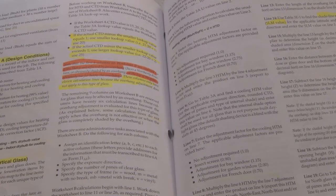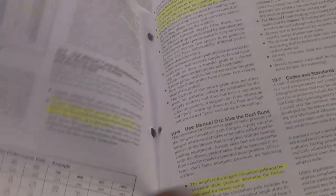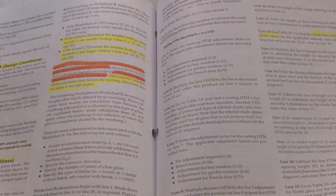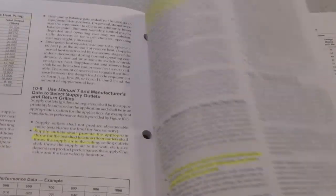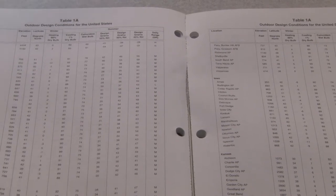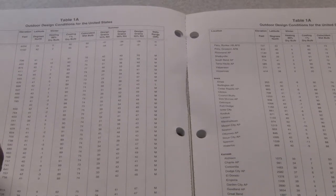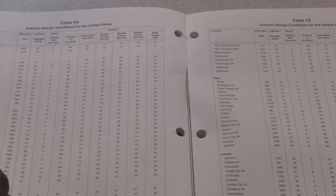Absolutely — not only the type of equipment, but how we size the equipment. We'll go to Table 1A, which is referenced in Worksheet A. Looking under Illinois, we can go to Chicago, which is broken down into multiple areas: Chicago Midfield, which is basically downtown off the lakefront, Midway Airport, and O'Hare Airport. The table gives the elevation for each location.